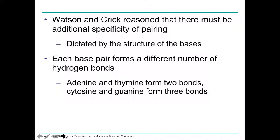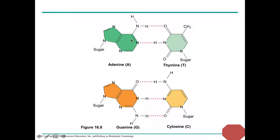Watson and Crick figured out that the structure of the bases makes them attach to each other specifically. Each base pair forms a different number of hydrogen bonds: adenine and thymine — A and T — have two hydrogen bonds with each other, and cytosine and guanine have three hydrogen bonds. You can see they fit together like a puzzle. Adenine always pairs with thymine, and guanine always pairs with cytosine in DNA. You absolutely need to remember: A goes with T, and G goes with C in DNA.